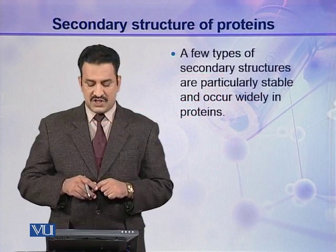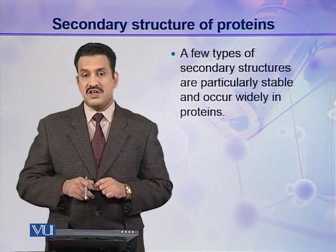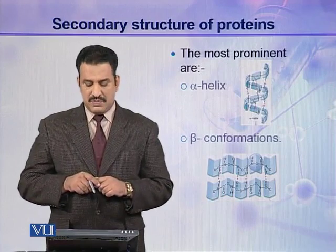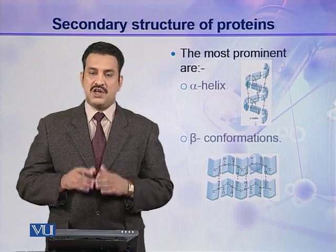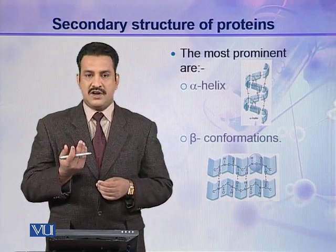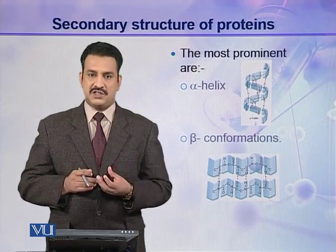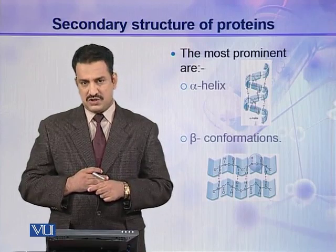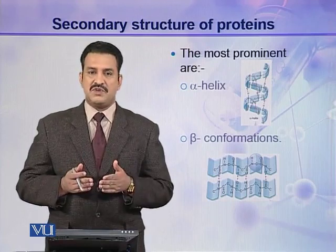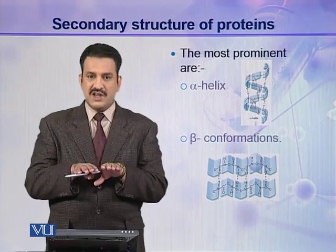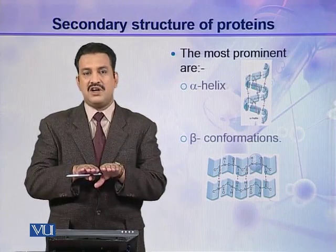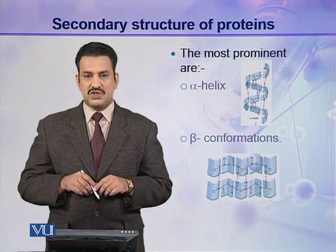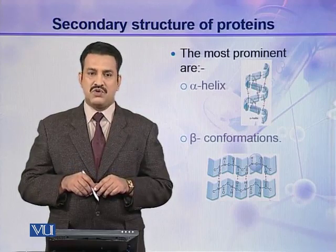A few types of secondary structures are particularly stable and occur widely in proteins. These include alpha helix and beta conformations. In alpha helix, a polypeptide chain is helically coiled around an imaginary axis. In beta conformations, polypeptide chains stretch side by side longitudinally and form sheets called beta sheets. So alpha helix and beta sheets are the most prominent secondary structures found in different protein molecules.